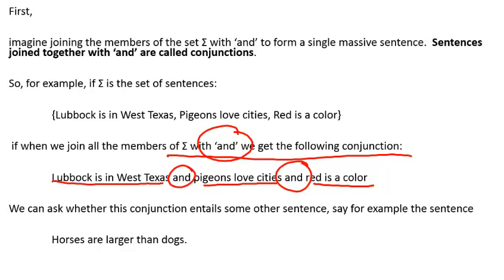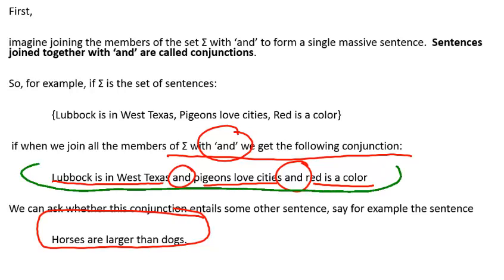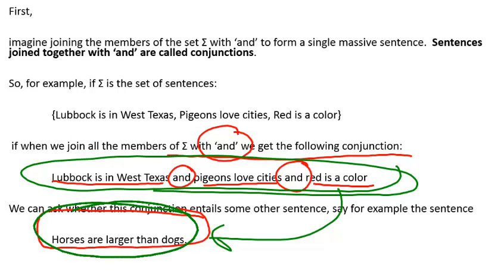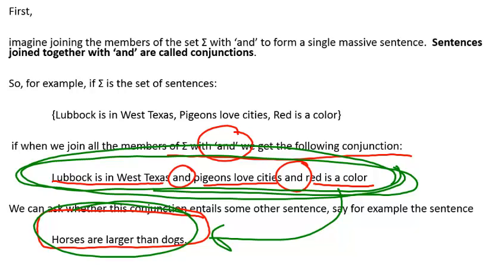We're going to ask whether this conjunction entails some other sentence. In our case, the candidate sentence is 'horses are larger than dogs.' Intuitively, there doesn't seem to be any relationship between what's going on in sigma and that sentence — of course, 'horses are larger than dogs' is not entailed by sigma. But how do we show that formally? We're trying to determine whether 'horses are larger than dogs' is entailed by sigma.